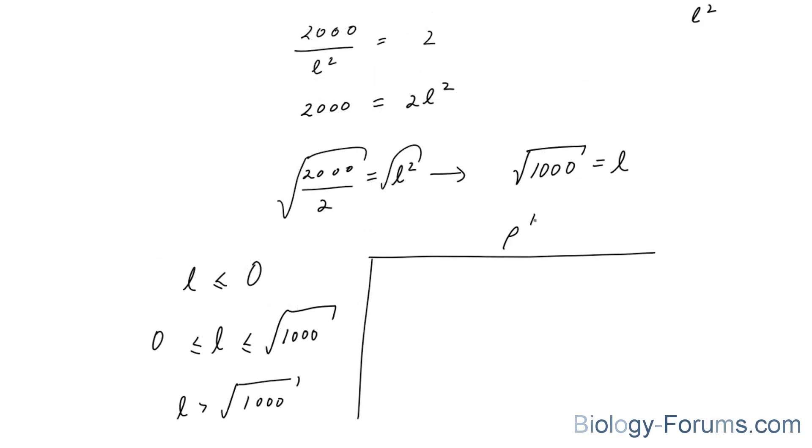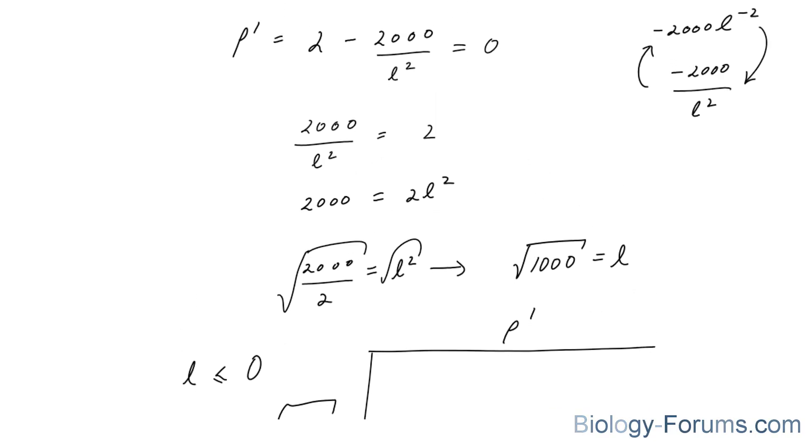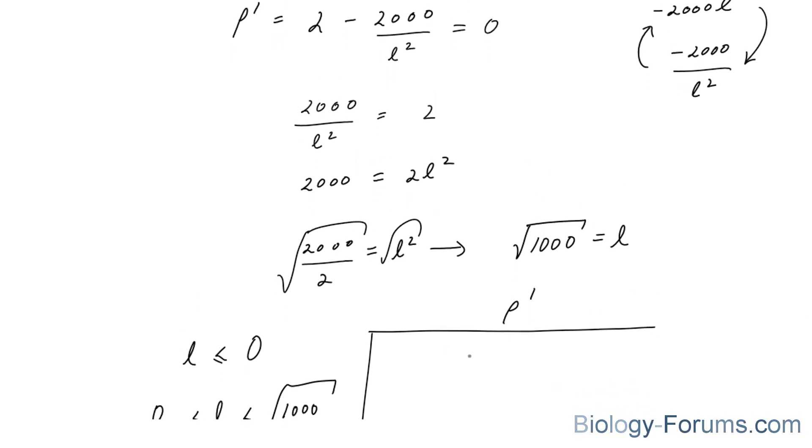So, using P prime, we can substitute values that are less than 0, and let's do that. 2 times 2,000 over negative 1 to the power of 2, and this will obviously give us a negative number. We don't need to find the number.